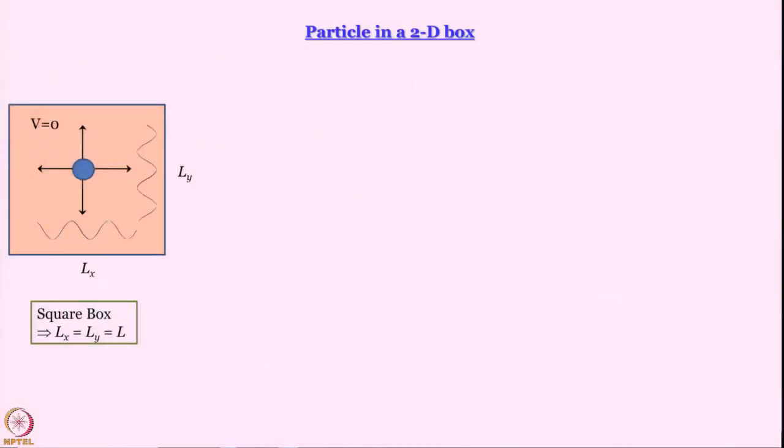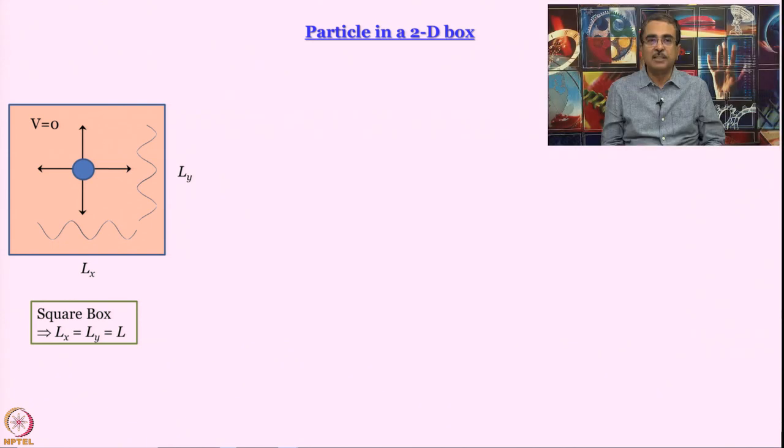We have discussed the free particle and what happens when we put this free particle into confined space in one dimension - the particle in a box problem. Now let us see what happens if we increase dimensionality. What happens if you put this particle in a 2D box or a 3D box? We will need to draw very good looking pictures and we are going to learn a very important technique - separation of variables.